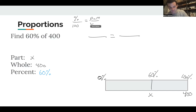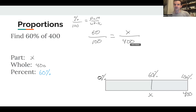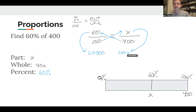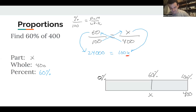So we write: 60 out of 100 equals X out of 400. Now we cross multiply — 400 times 60 is 24,000, and 100 times X is 100X. Because this is a proportion, these equal each other: 100X = 24,000. X is being multiplied by 100, so we divide both sides by 100.